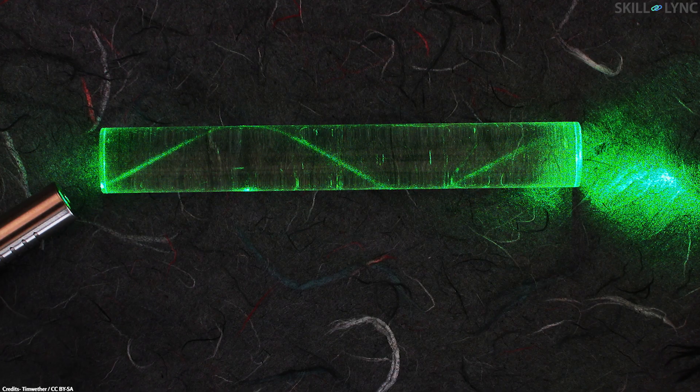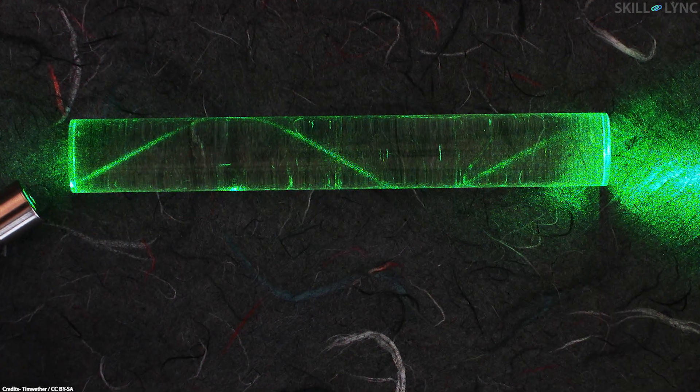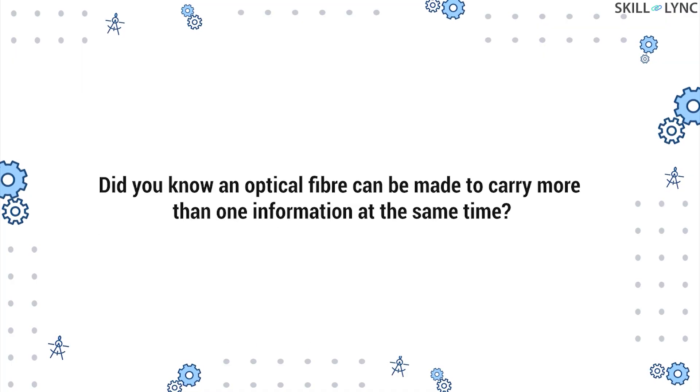This is how information is made to travel through an optical fiber by determining the correct angle. Did you know that an optical fiber can be made to carry more than one information at the same time? To know more about this, you'll have to watch our next video on fiber optics. Until then, bye.